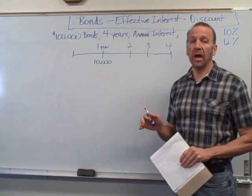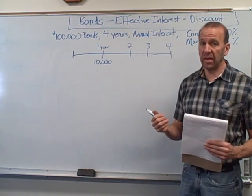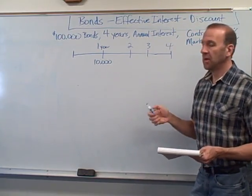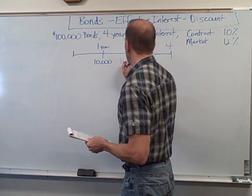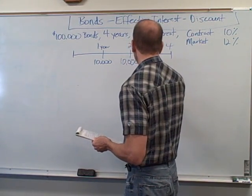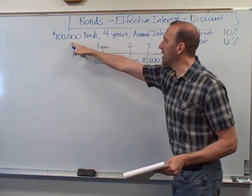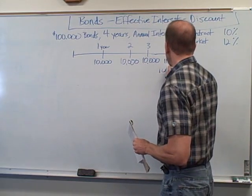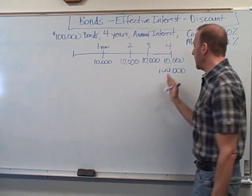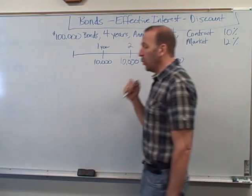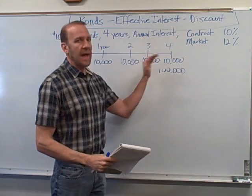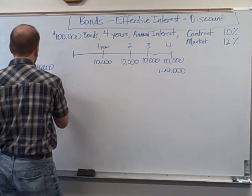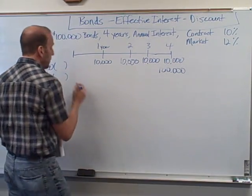First, I want to show you how to value this bond - what should it sell for if the contract rate is 10% but the market rate is 12%? We look at the cash flows: we'll pay out $10,000 each year for four years, calculated as $100,000 times the 10% contract rate. Plus, the corporation must pay back the principal of $100,000 at the end of year four. We figure out the current value by discounting these cash flows back to the present using present value tables.